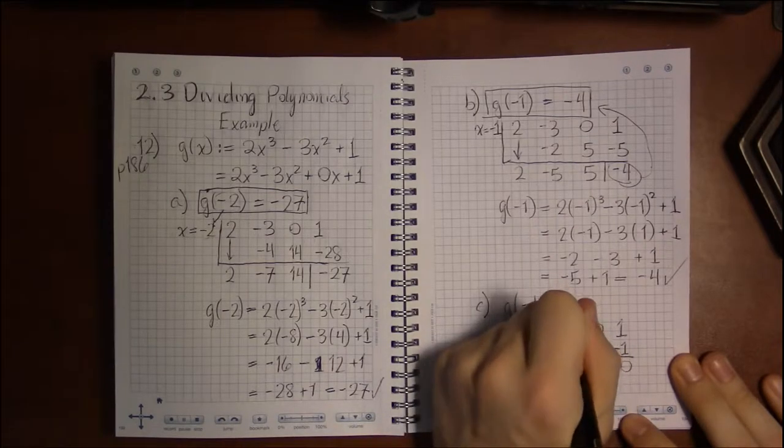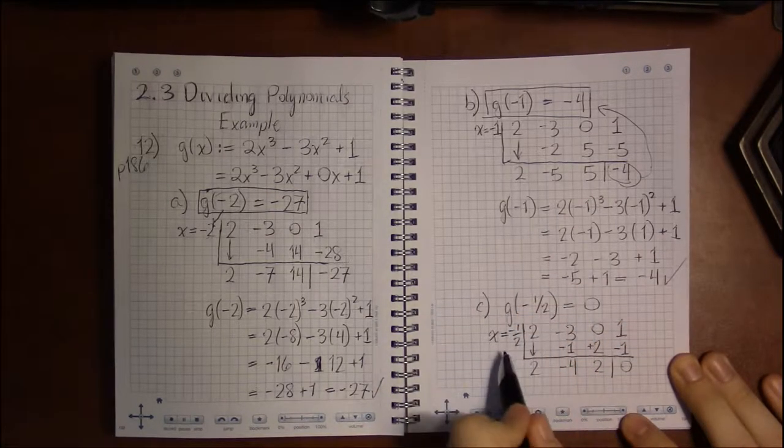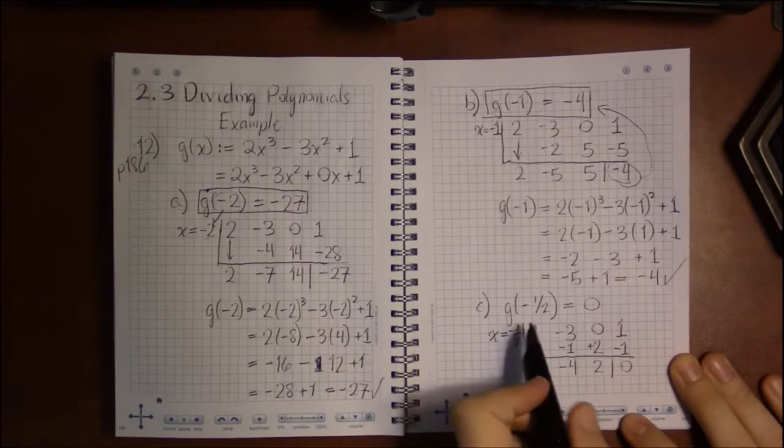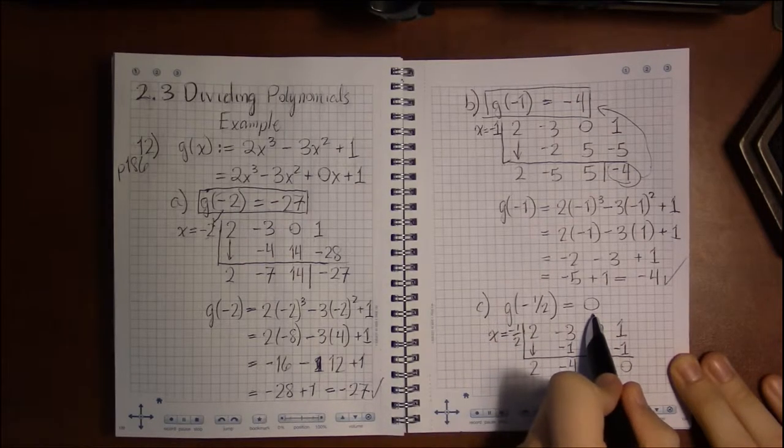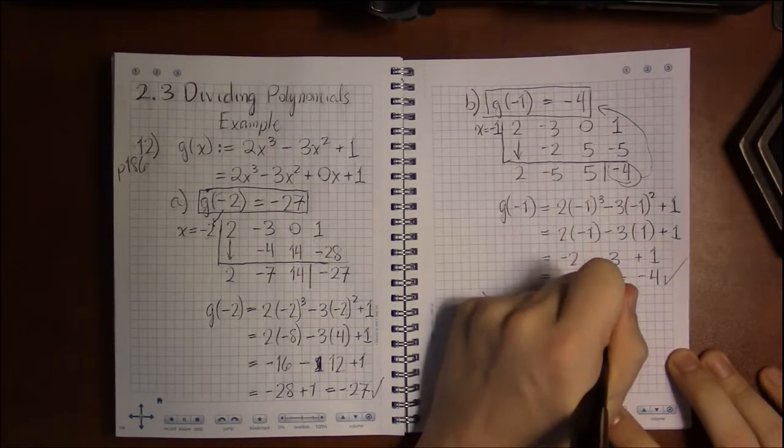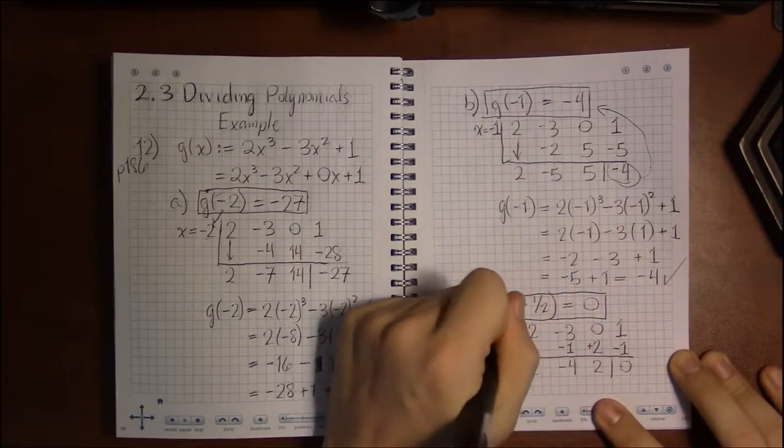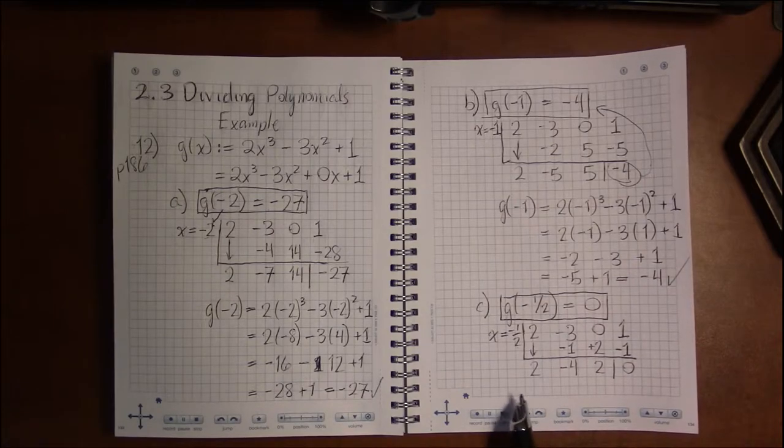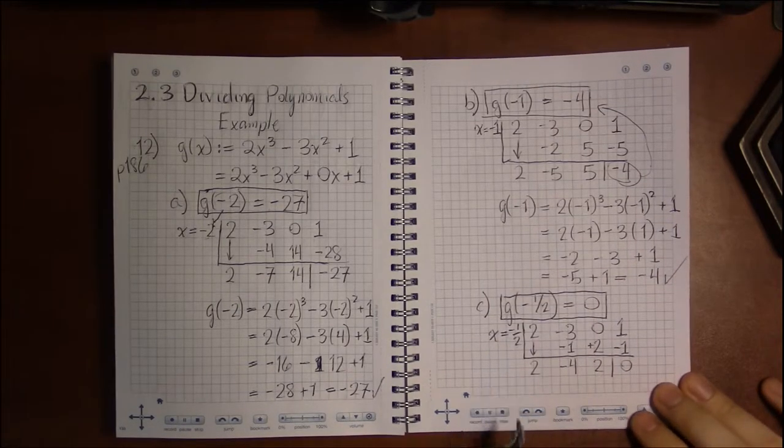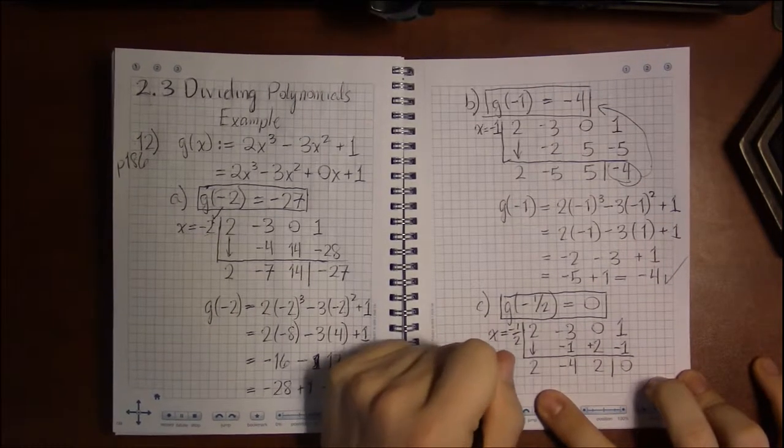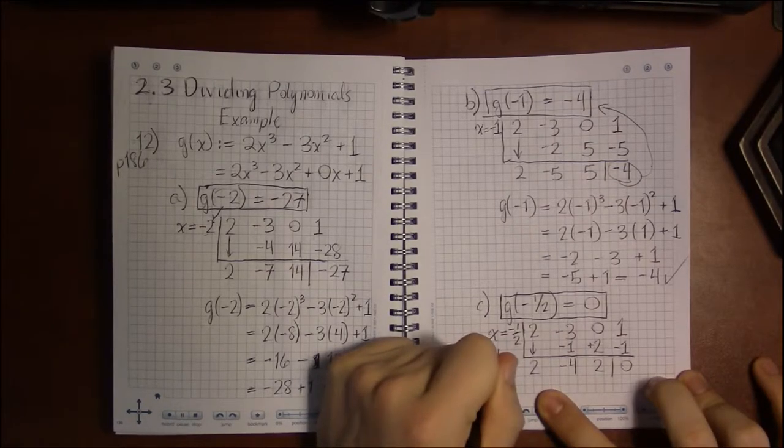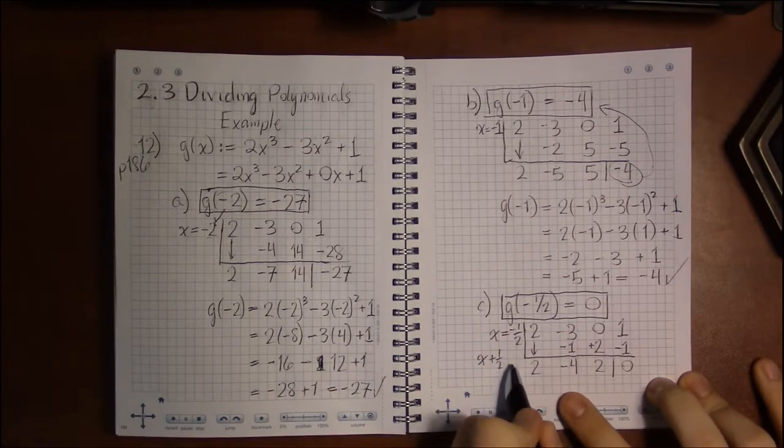So it turns out that when x equals minus 1 half, g is 0. We found a root of g.